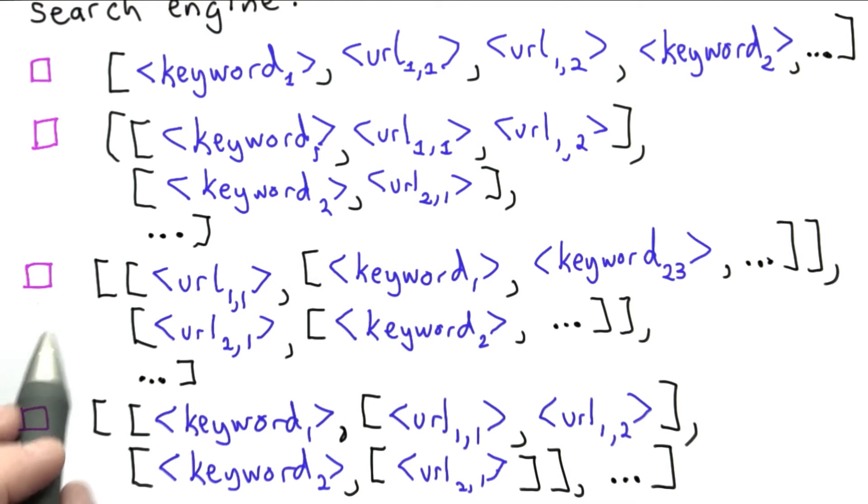The third option, we could have a list where each element of the list is a list, where the first element is the URL. And the second element is a list of all the keywords that are found on that page.